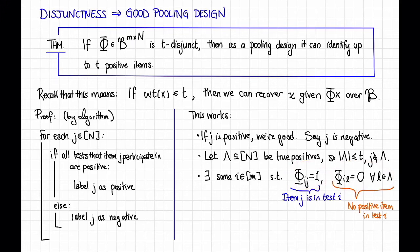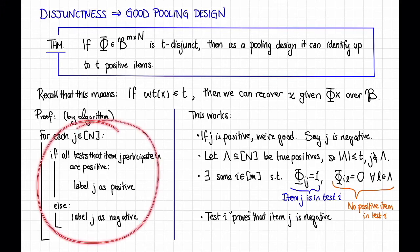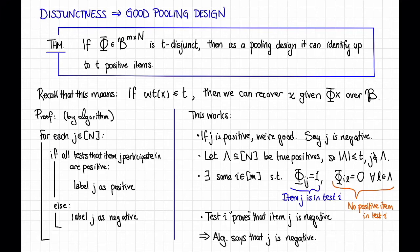So therefore, test i is proof that item j is not positive. And because that's how this algorithm worked, it just went through and looked for exactly such proof, the algorithm is going to say that j is negative. Therefore, the algorithm is correct, which is what we were trying to show. So that proves this theorem.